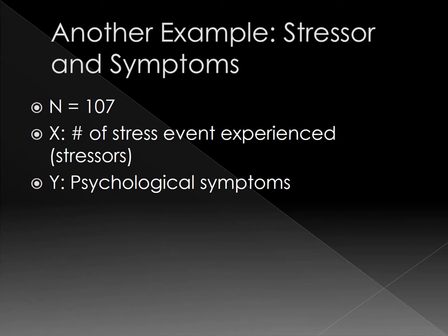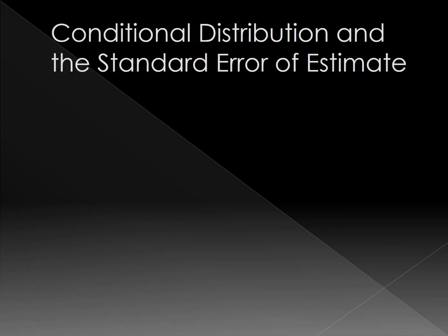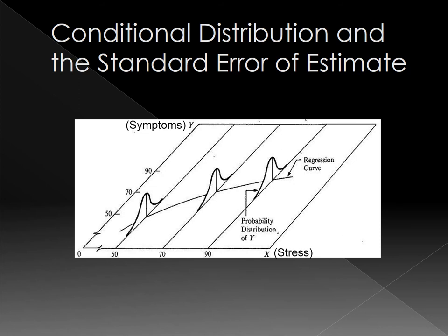Here I have another example. The x is stressor and y is symptoms. I have 107 freshmen and x is number of stressful events they experienced in the first semester, or we call these stressors. And y is their psychological symptoms such as feel worried, feel anxious. This figure displays the relationship between x, stressor and y, those symptoms.